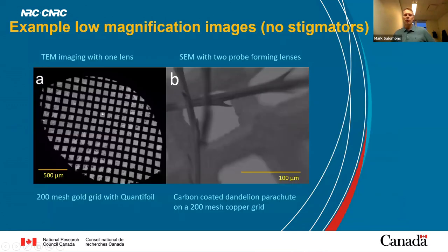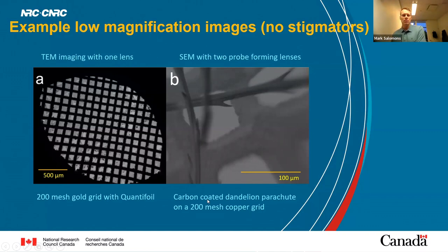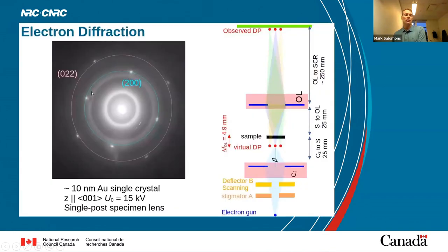Just a couple of initial images — nothing crazy at this point; we've only done a couple lenses in the system. This is just a quantifoil mesh grid, and then we've done an SEM image — we took some carbon-coated dandelion parachutes just to show that we can get images; we haven't done any stigmation yet or cleaned up the beam. We've also done electron diffraction on a 10 nanometer gold single crystal, just with a single post-specimen lens, to show that it can be done.